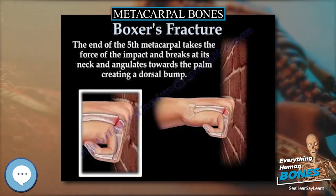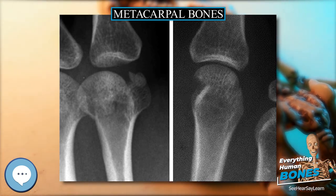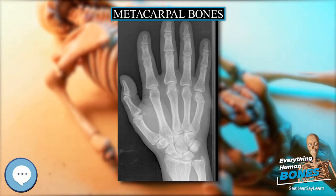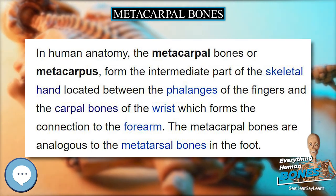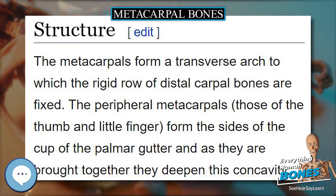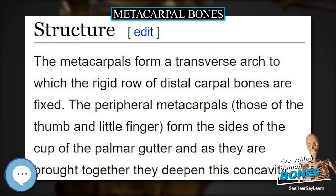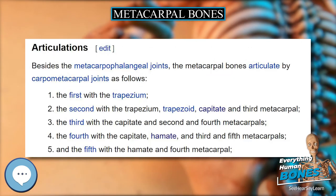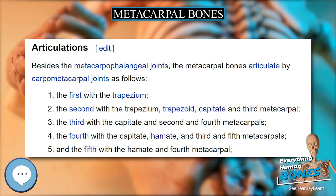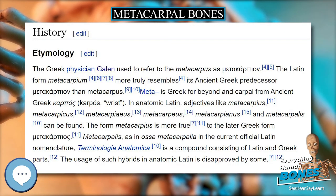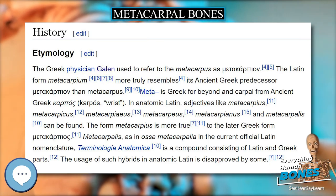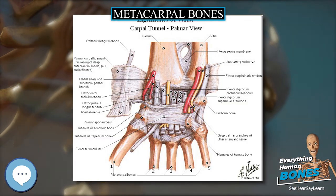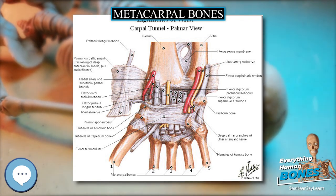History and etymology: the Greek physician Galen used to refer to the metacarpus as 'metakarpion.' The Latin form 'metacarpia' more truly resembles its ancient Greek predecessor than 'metacarpus.' 'Meta' is Greek for 'beyond,' and 'carpal' derives from ancient Greek 'karpos,' meaning wrist. In anatomical Latin, adjectives such as metacarpius, metacarpicus, metacarpiaeus, metacarpianus, and metacarpalus can be found. The form 'metacarpalus,' as in 'ossa metacarpalia,' in the current official Latin nomenclature Terminologia Anatomica, is a compound of Latin and Greek parts — usage of such hybrids in anatomical Latin is disapproved by some.